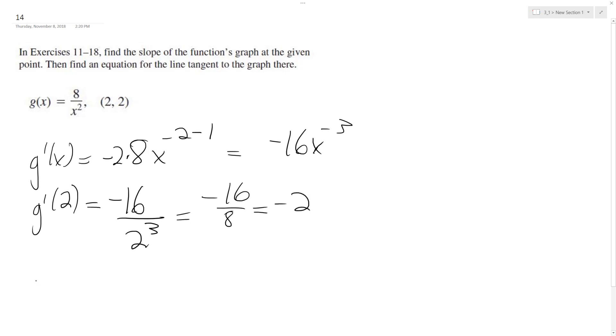So our tangent line, we're going to use the point-slope form. This is the slope at the point 2, at x equals 2. So we're going to use y minus 2 is equal to negative 2 times (x minus 2). So we end up with y minus 2 is equal to negative 2x plus 4. Add 2 to both sides, and ultimately what we end up with is y is equal to negative 2x plus 6.